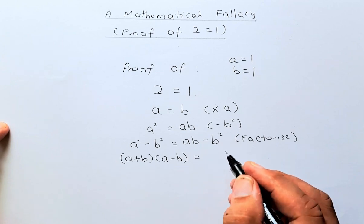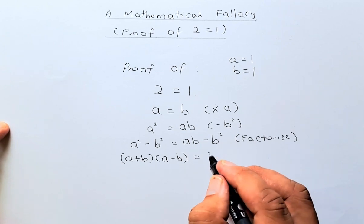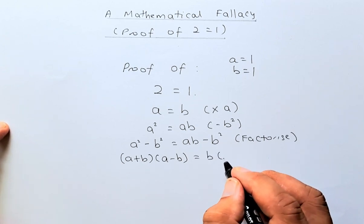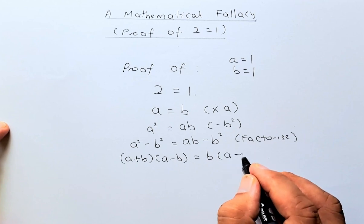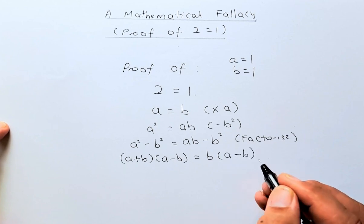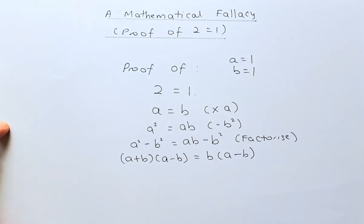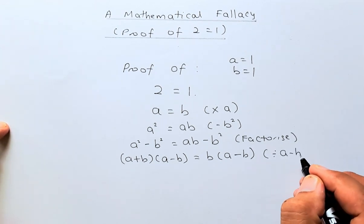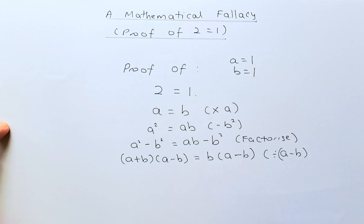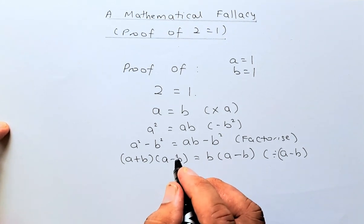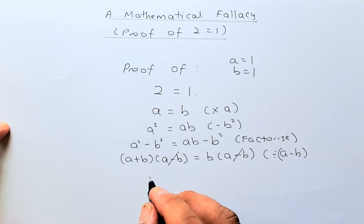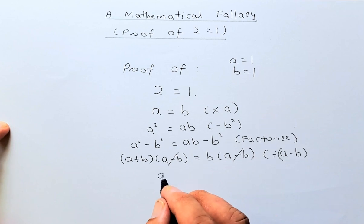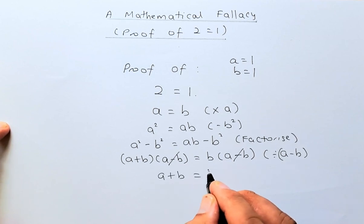On the right-hand side, you're going to take B as the common factor and you are left with A minus B. The next thing we're going to do is divide by A minus B on both sides because it appears on both. So you can cancel them out and your answer is going to be A plus B equals to B.